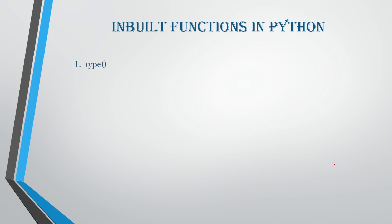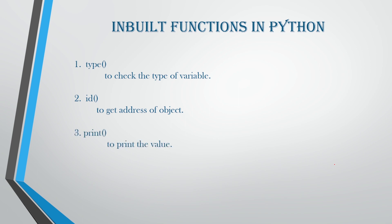The first inbuilt function is the type() function — used to check the type of variable in your container, whether it is integer, float, or character. The second is the id() function — used to get the address of a particular object. The third is the print() function — prints values just like System.out.println in Java or printf in C. One more important thing: in Python, every single thing is an object.